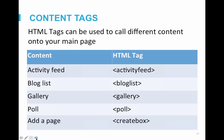As Sarah mentioned, there are lots of content types you can pull automatically onto your main page using HTML tags. Each different type of content has a different tag associated with it. The most popular tags include: activity feed, which shows the most recent editing activity on your wiki; blog list, which pulls in recent user blogs; gallery, which can display images in numerous different ways; polls, to create community polls; and create box, which gives users a quick way to create new pages.